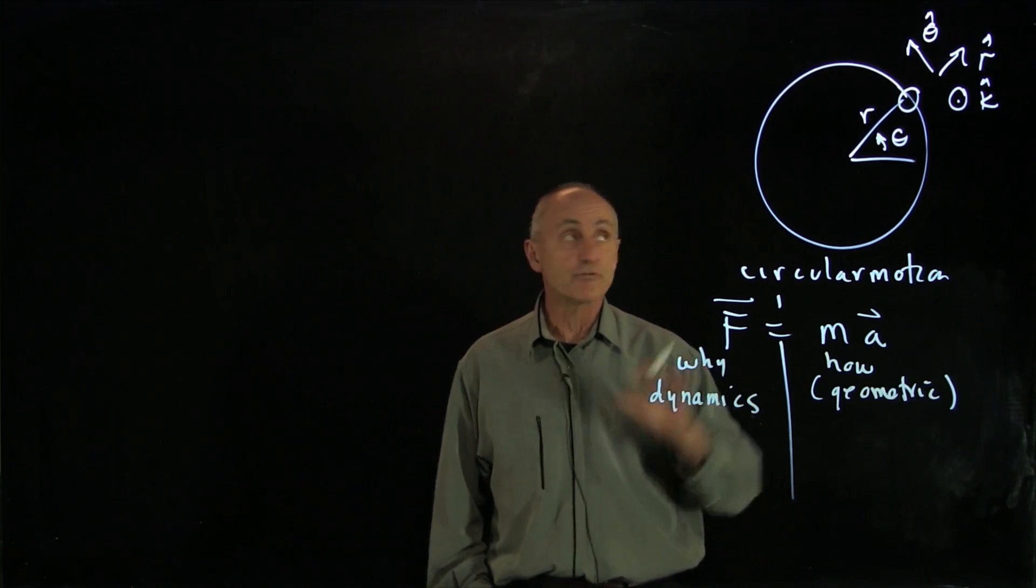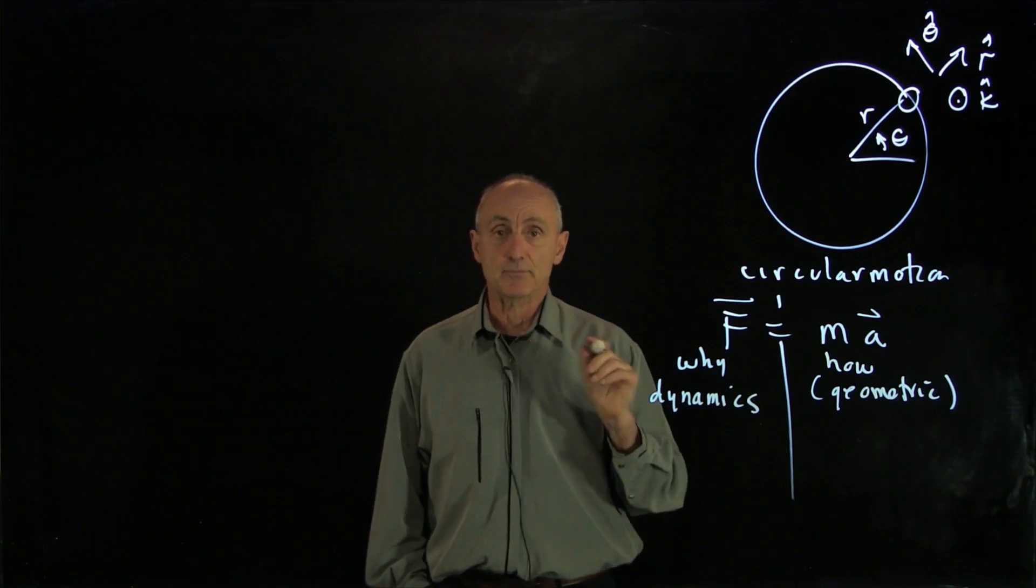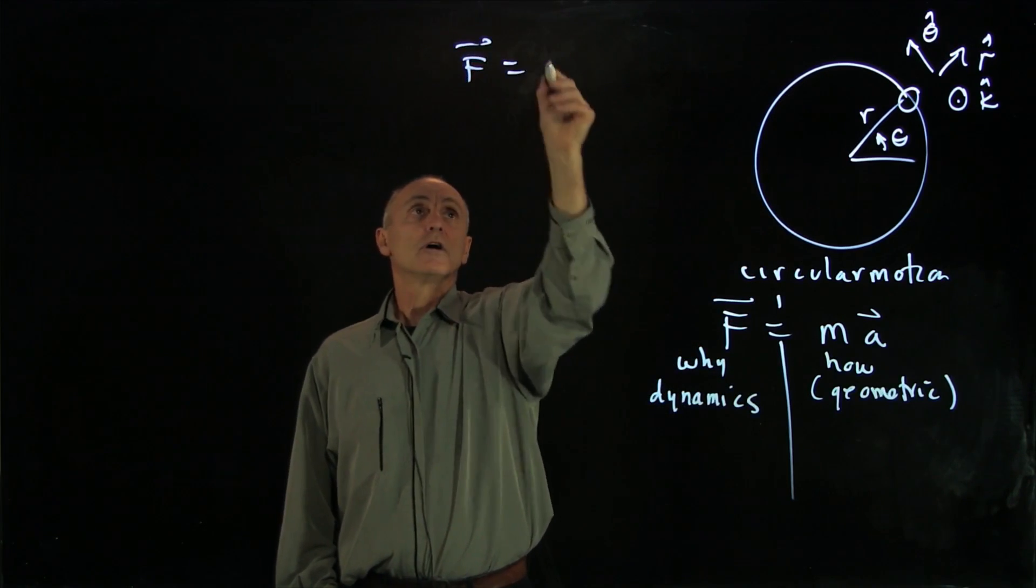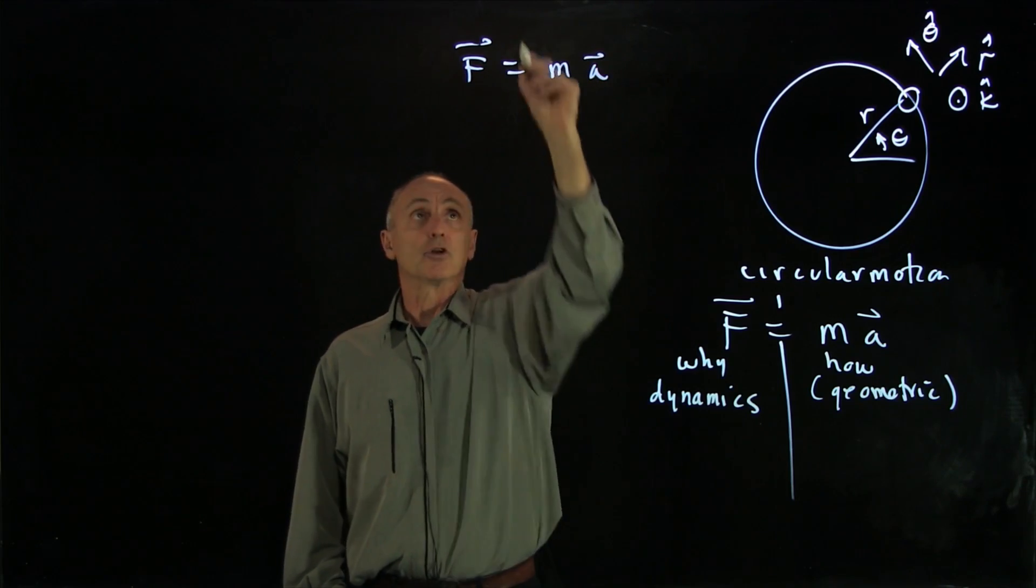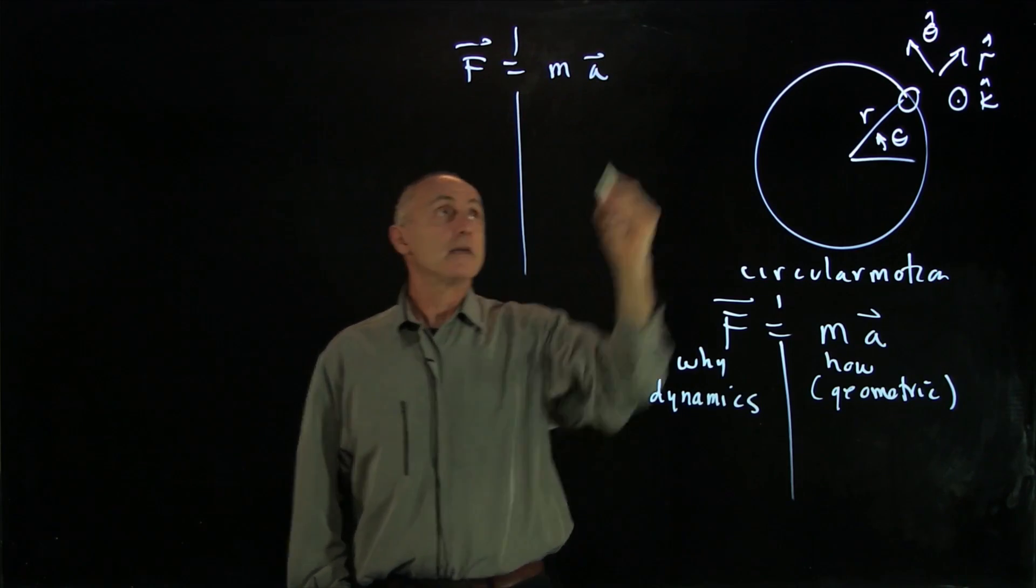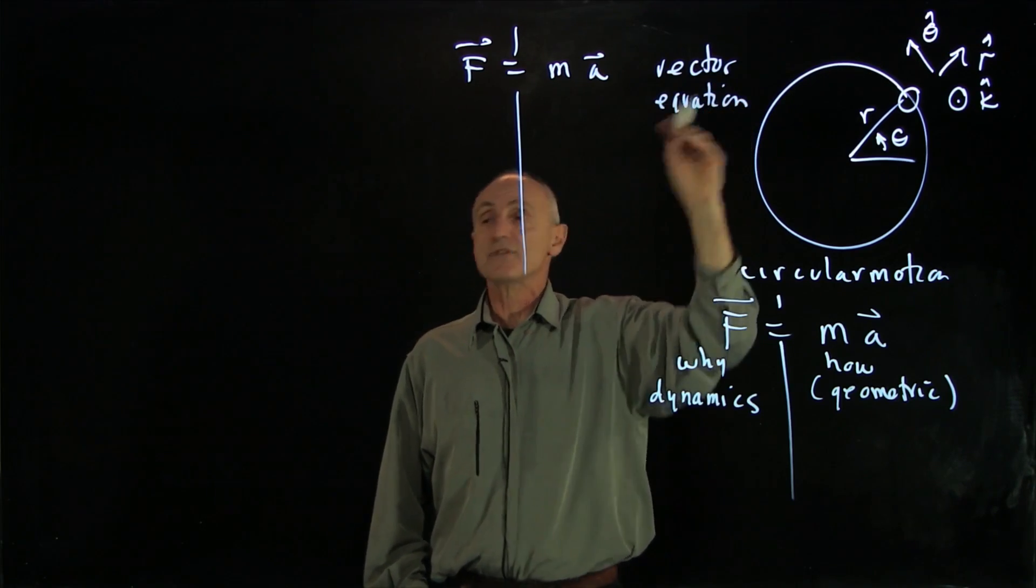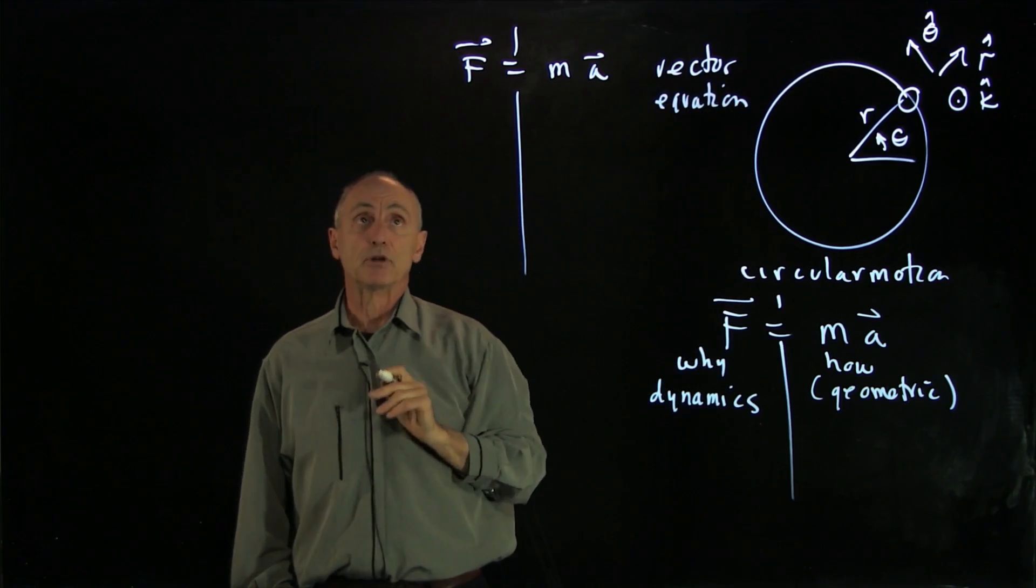And the dynamics come from analyzing the forces that are acting on this object. So when we're applying this mathematically to circular motion, F equals ma, this is a vector equation. And so what we need to do is think about each component separately.